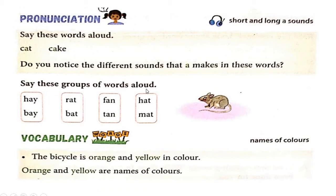Now say these groups of words aloud again. Hay, bay — H-A-Y, hay; B-A-Y, bay. Rat, bat — R-A-T, rat; B-A-T, bat. Fan, tan — F-A-N, fan; T-A-N, tan. Hat, mat — H-A-T, hat; M-A-T, mat.